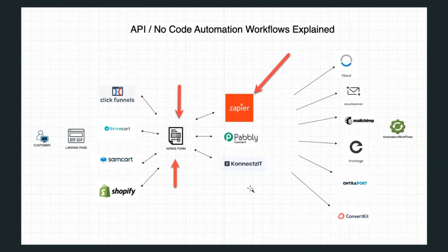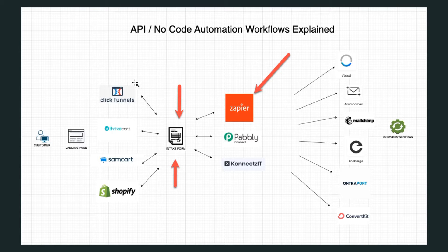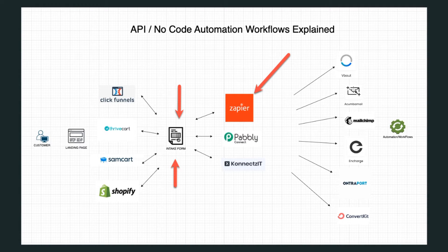In essence, that's basically what it is. A person comes in one side, they go through any one of these intake forms — any type of landing page with a form to capture the information — then it's sent through Zapier or a Zap, and then sent to any one of these emailing systems, whether it be MailChimp, Entrеport, ConvertKit, InCharge, or VBout, and takes them down a customer journey on the back end.